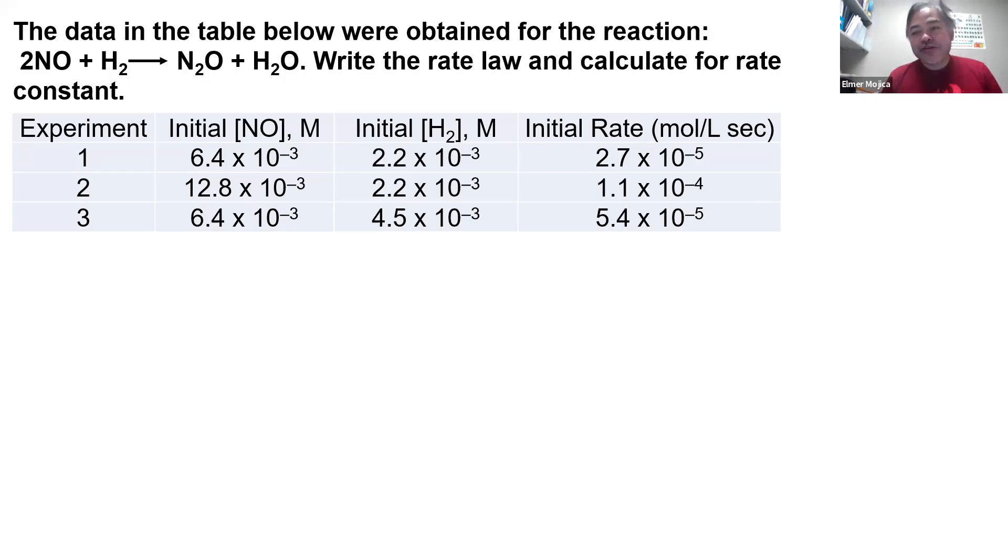For this problem we're going to see how we write the rate law given some experimental data. The data in the table below were obtained for the reaction 2NO plus H₂ reacting to produce N₂O and H₂O. Write the rate law and calculate the rate constant. We have here the set of experiments with different concentrations.